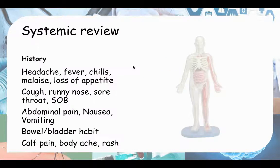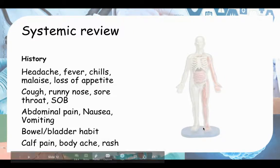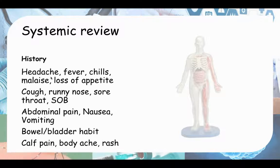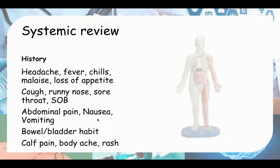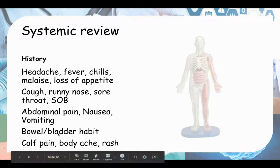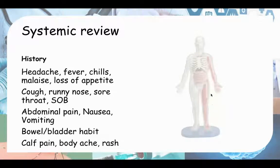For systemic review, ask from head to toe. Ask about headache and constitutional symptoms like fever, chills, malaise, and loss of appetite. Then ask about cough, runny nose, sore throat, and shortness of breath - pneumonia is an important differential. Go down to abdominal pain, nausea, vomiting, bowel or bladder habit changes, calf pain, body ache - they could have dengue - and any rash, as dengue and toxic shock syndrome can also present with rash.